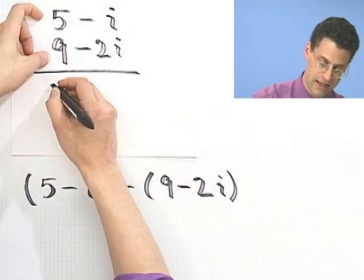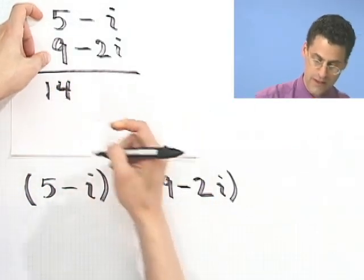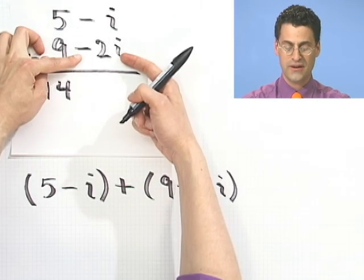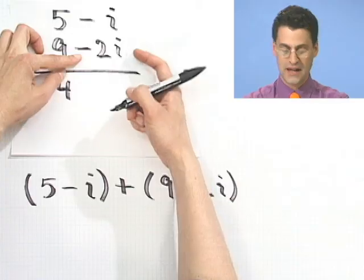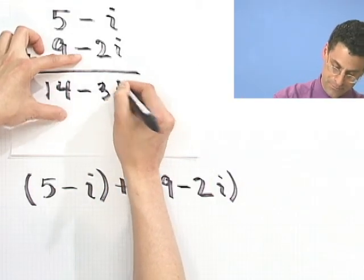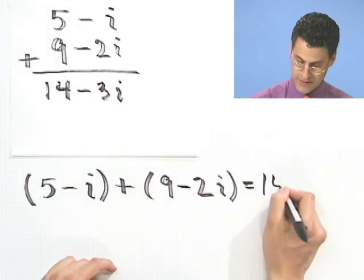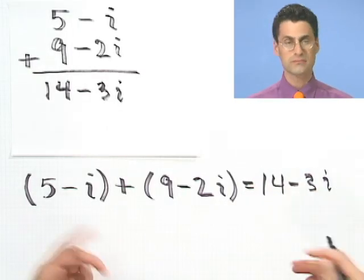If I have 5 and I add 9, I have 14. If I have a negative i and I have a negative 2i, how many i's do I have together? Well, obviously negative 3i. So this thing would just be that, 14 minus 3i. Not a big deal.